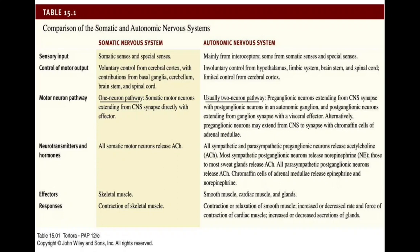For the somatics, neurotransmitters are all acetylcholine. All sympathetic and parasympathetic preganglionic neurons release acetylcholine. Most sympathetic postganglionic neurons release norepinephrine; sweat glands release acetylcholine. All parasympathetic postganglionic neurons release acetylcholine. The effectors of the somatic system are skeletal muscle; for the autonomics they are smooth muscle, cardiac muscle, and glands. The autonomic response can be contraction or relaxation of smooth muscle, increased or decreased cardiac rate and force, and increased or decreased glandular secretion.